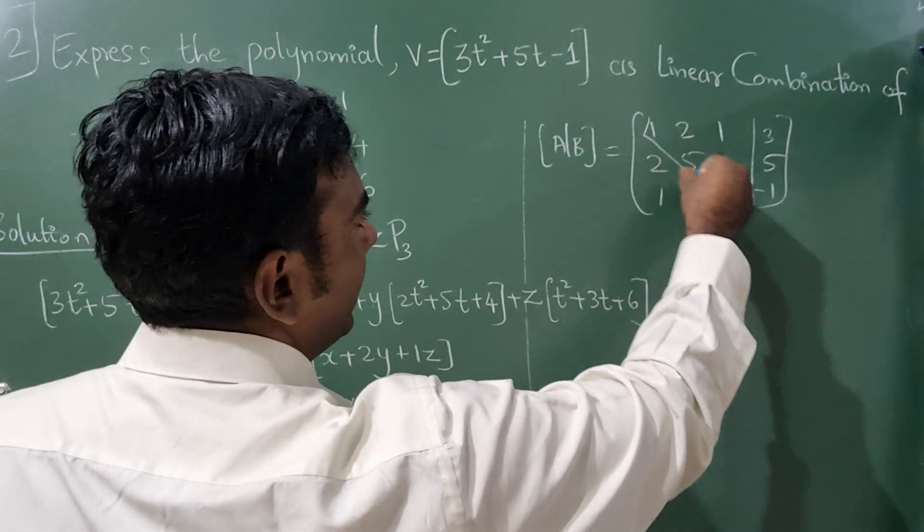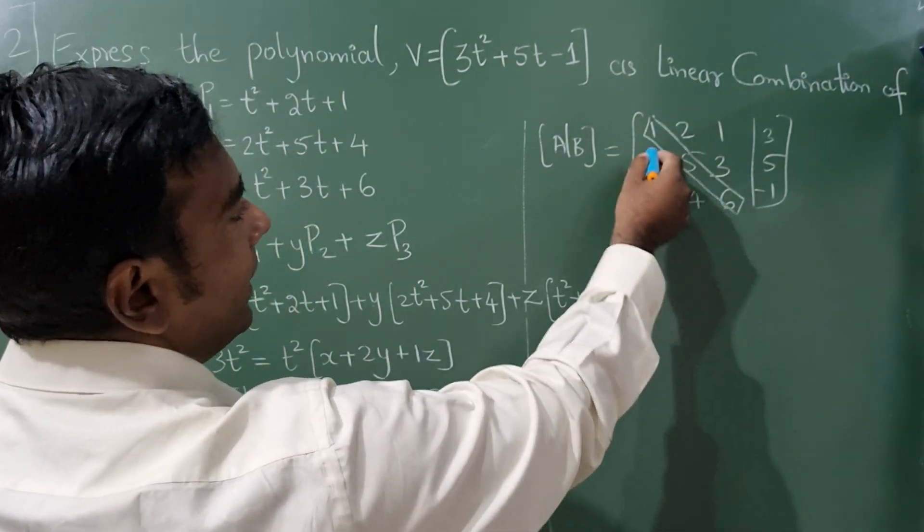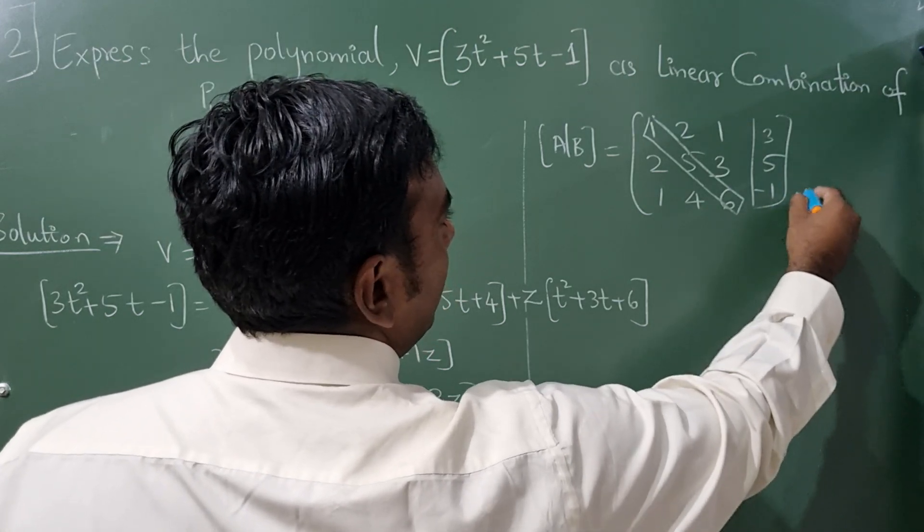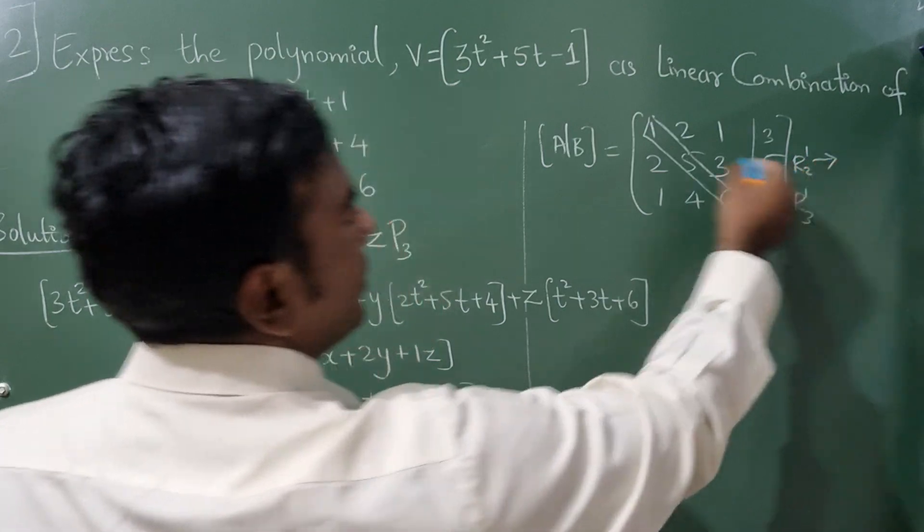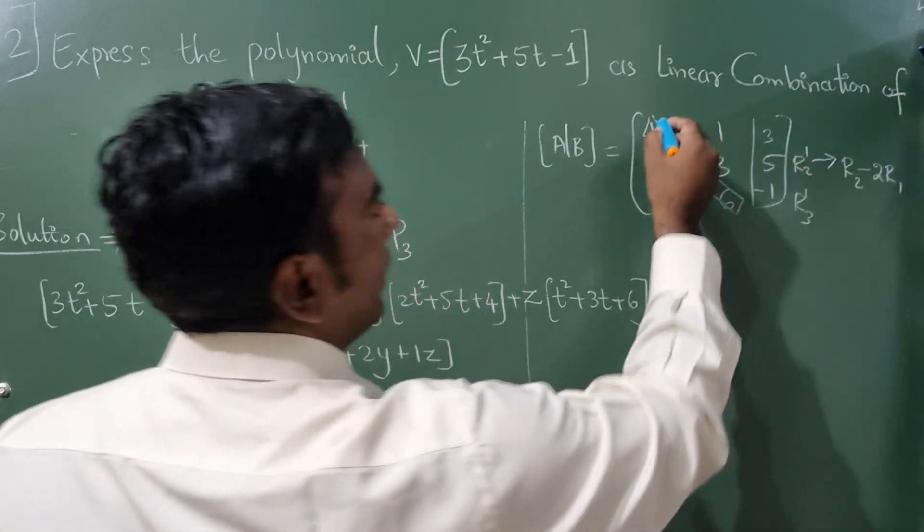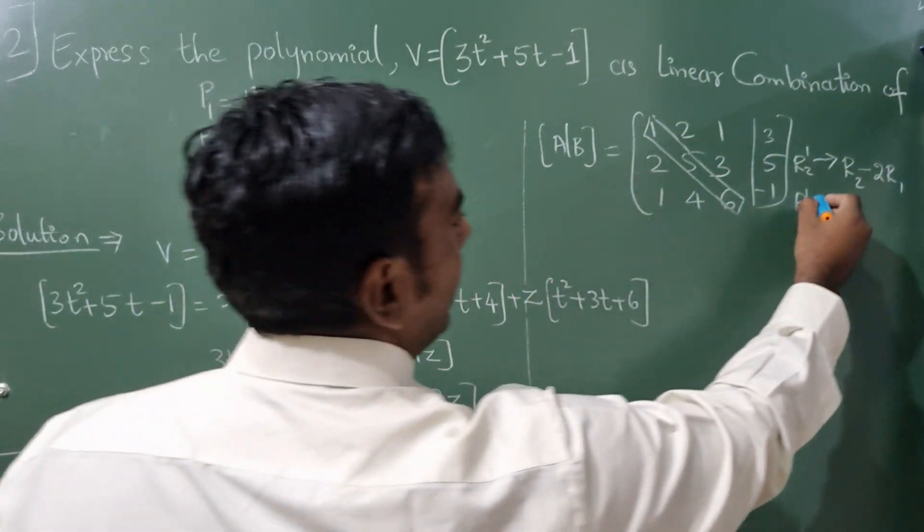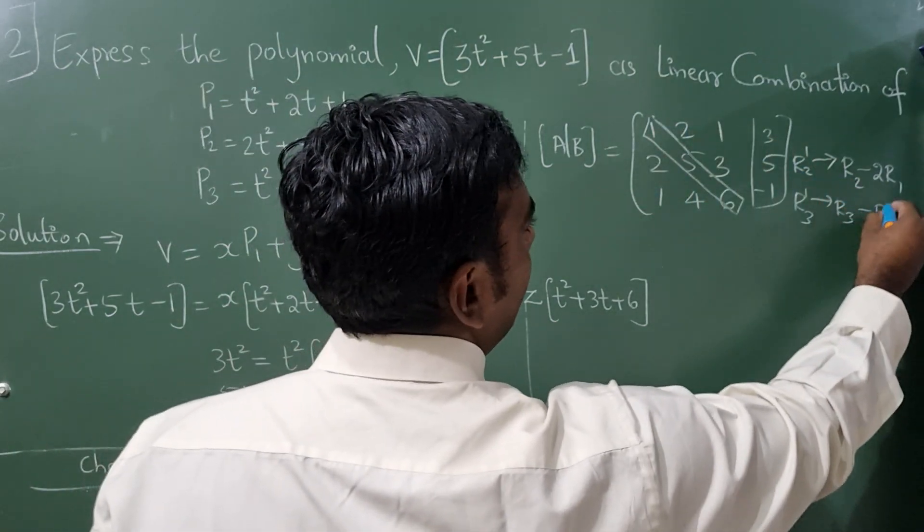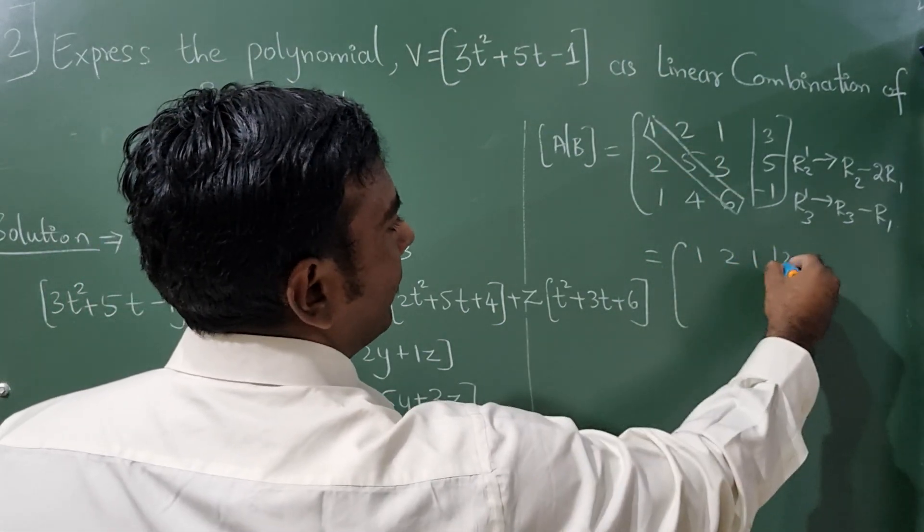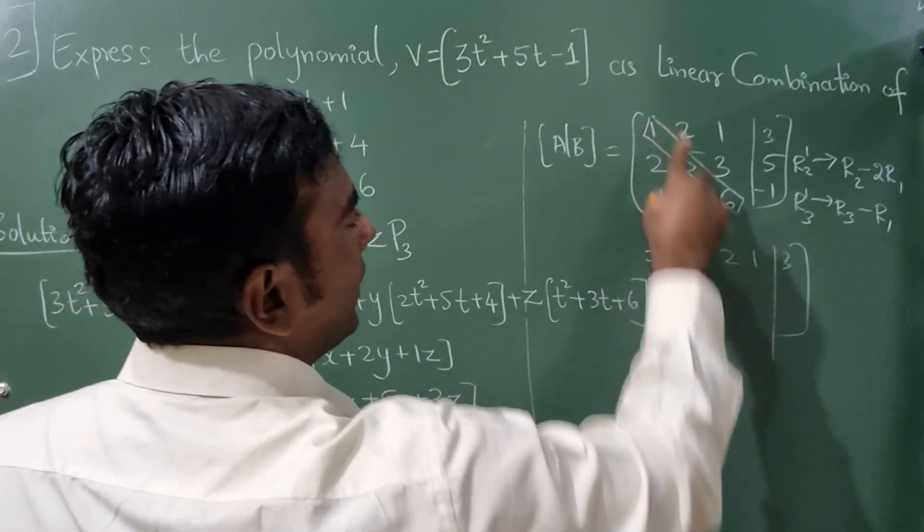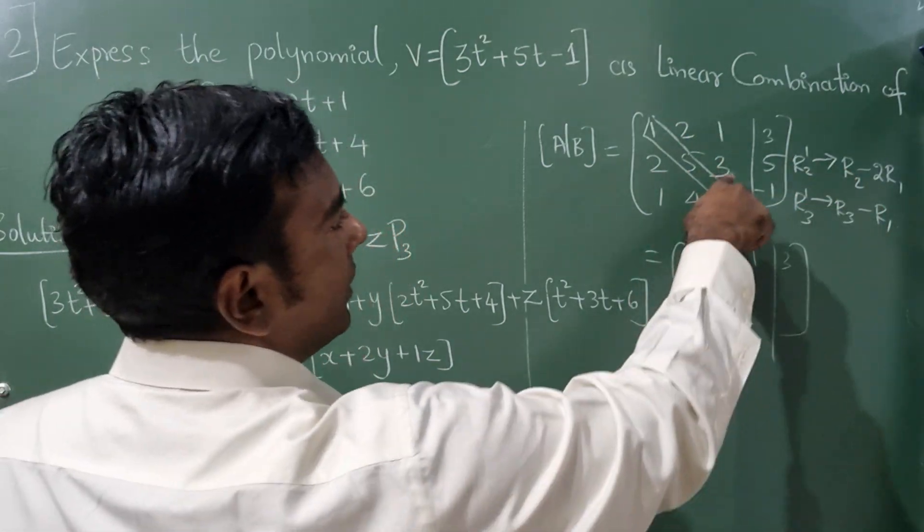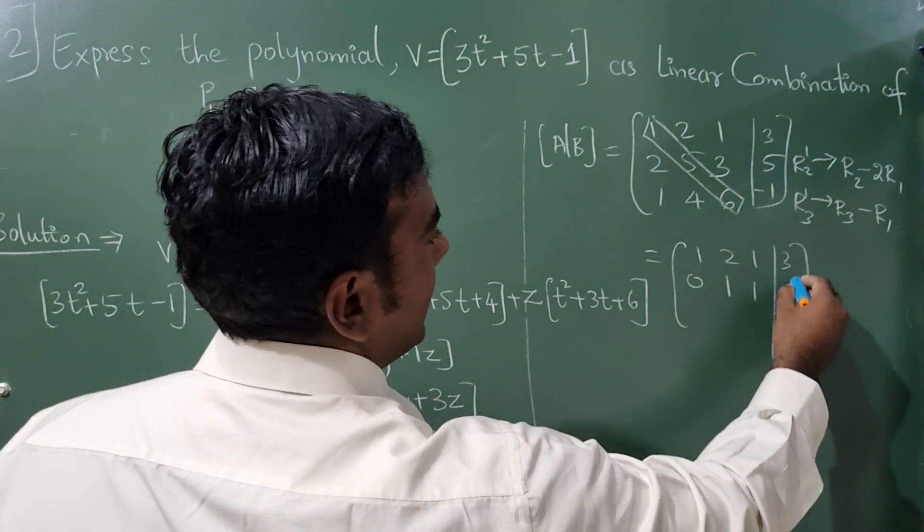Now this is your diagonal element and these three elements you have to make 0. So what should you do? This is your R2. Write R2 minus 2·R1 will become 0. Here row R3 minus R1 will become this 0. Write first row as it is. So 2 minus 2 is 0, 5 minus 4, 2 into 2, so it will be 1. 3 minus 2 is 1.